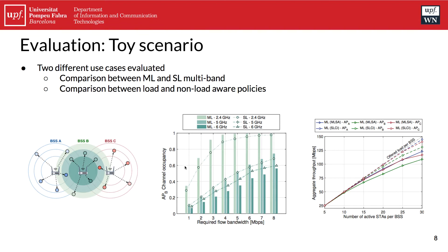Looking at the results, we can see that a multi-link deployment which uses a non-congestion-aware traffic policy performs equally to the single-link multi-band deployment that is currently defined on the standard. The performance is equal because the non-congestion-aware policy does not leverage the fact of access point B having two free contention links. On the other hand, the congestion-aware policy outperforms the MLSA baseline policy.